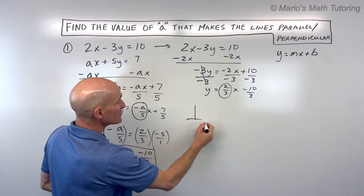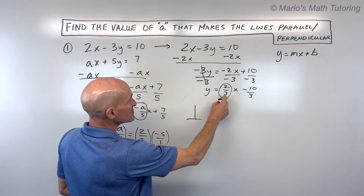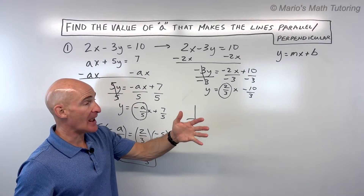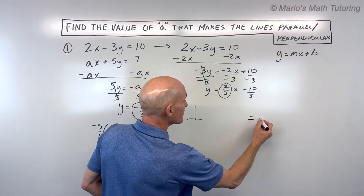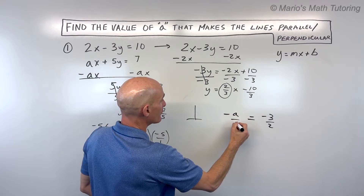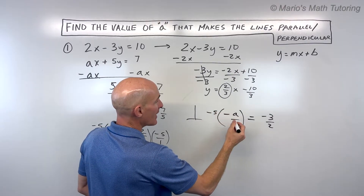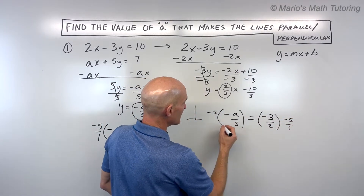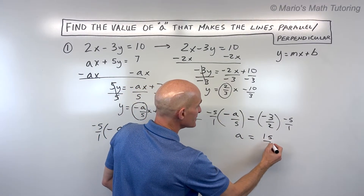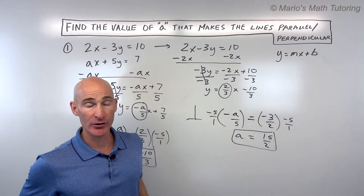For perpendicular lines, the slopes are opposite reciprocals. If the first slope is 2/3, the second slope must equal −3/2. So we set −a/5 = −3/2 and multiply both sides by −5. That gives us a = 15/2. That's the value of a that will make the lines perpendicular — at a right angle.